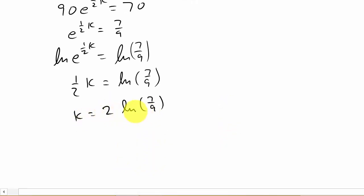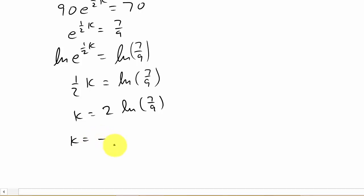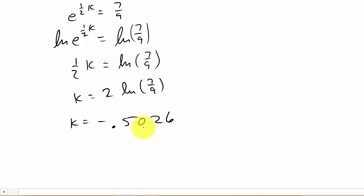You can leave it like that, or punch it into your calculator. Natural log of 7 divided by 9, times 2, gives approximately negative 0.502628857. I'm going to round this to four decimal places for the video — you may not want to round that number. So K is approximately negative 0.5026.